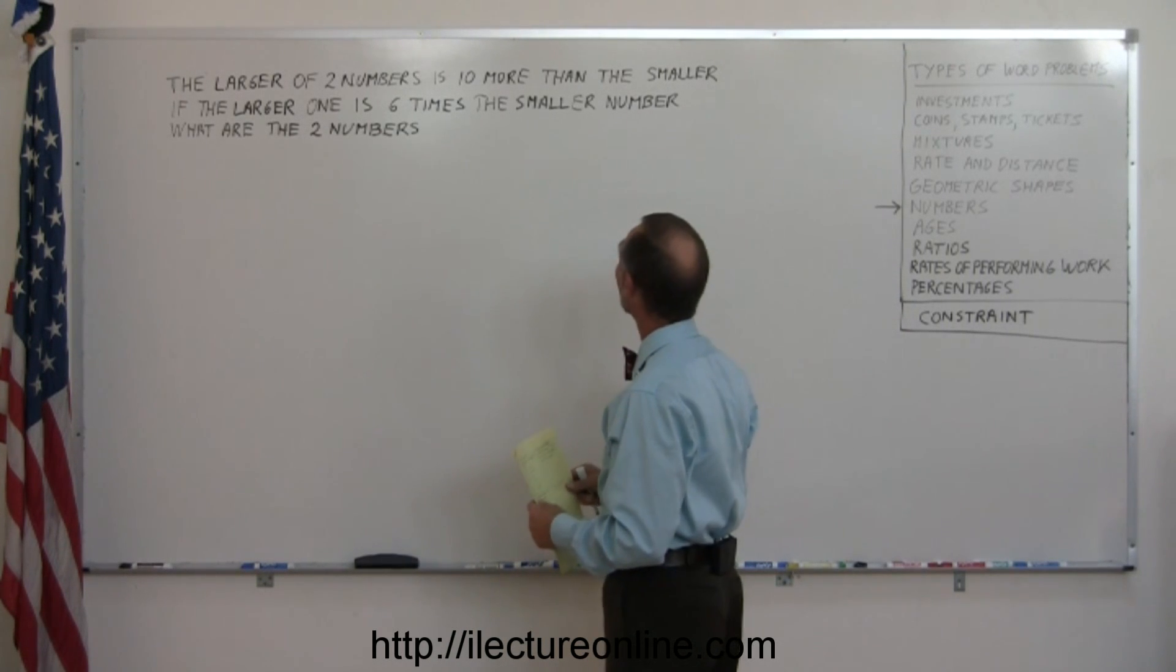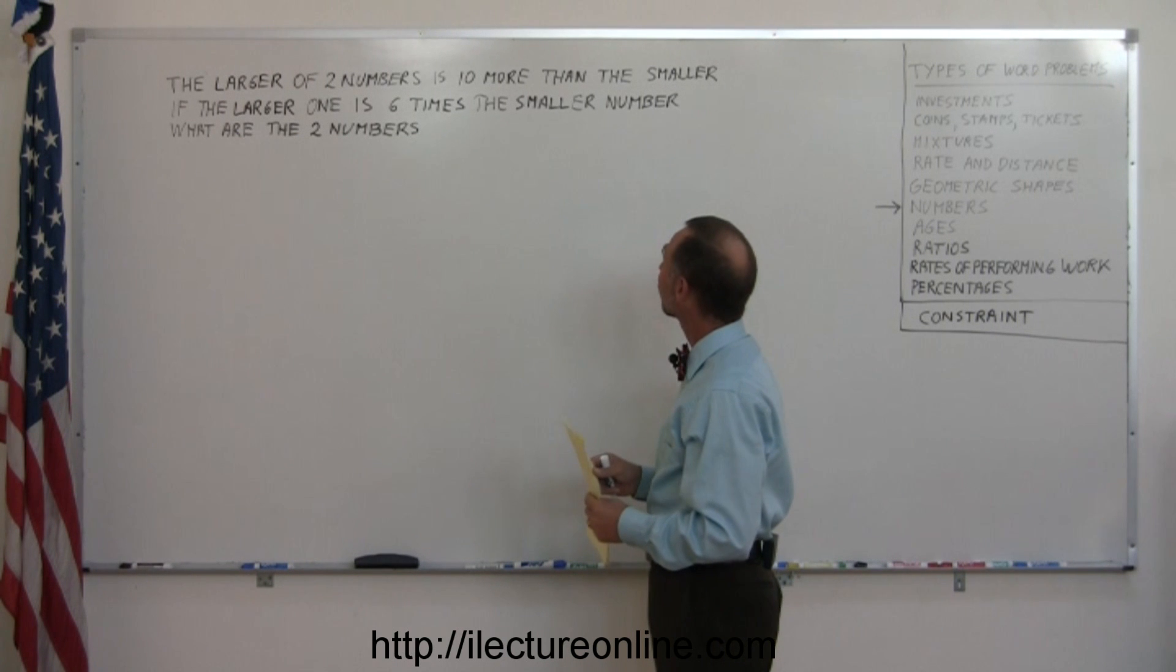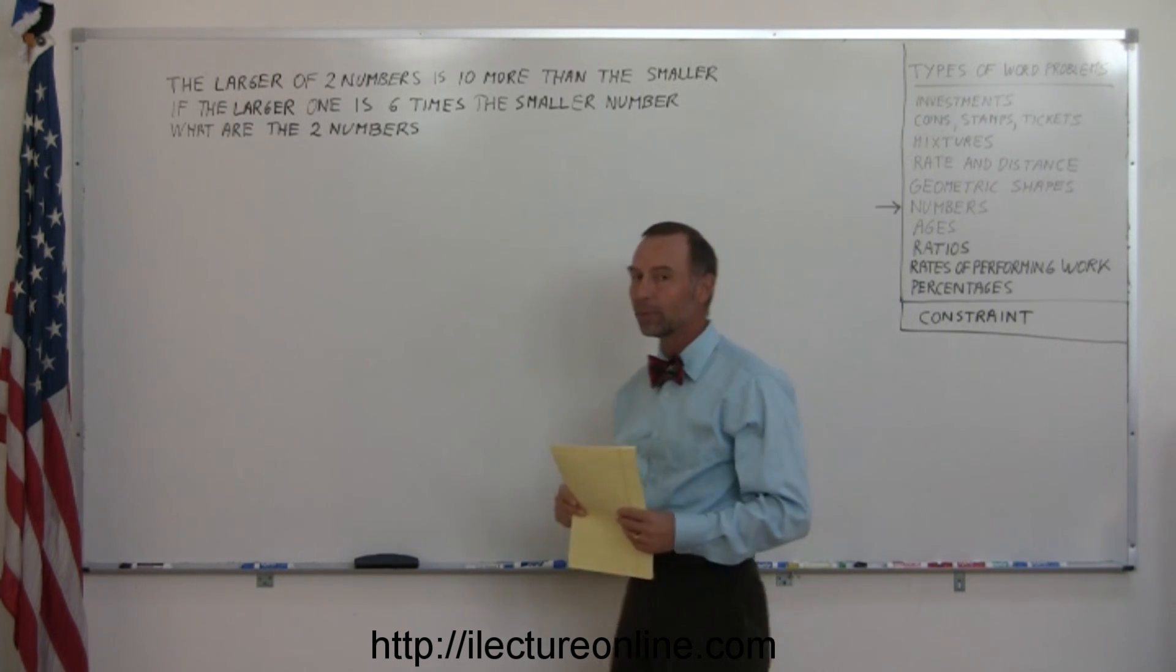The larger of the two numbers is 10 more than the smaller. If the larger one is 6 times the smaller number, what are the two numbers?